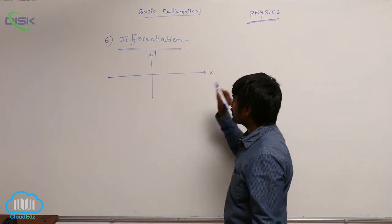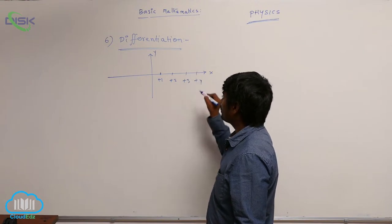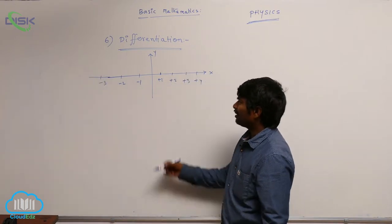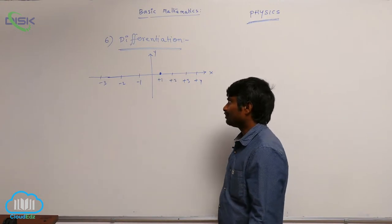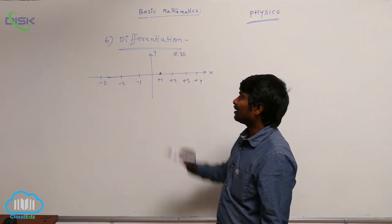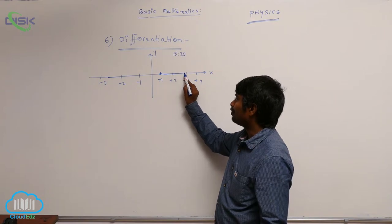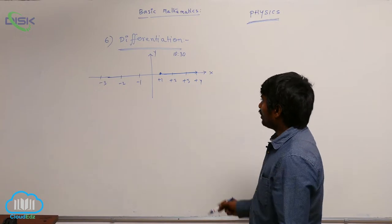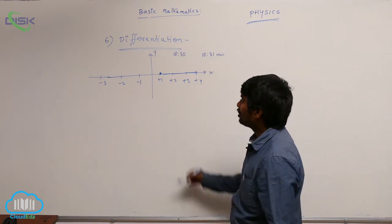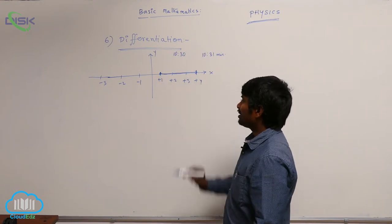Suppose we have a y-axis and x-axis with positions plus 1, plus 2, plus 3, plus 4, minus 1, minus 2, minus 3. Initially the object is at plus 1 meter at 10:30. It moves towards the positive x-axis, reaching plus 2, plus 3, and plus 4 by 10:31 — so it takes 1 minute to move from plus 1 to plus 4.